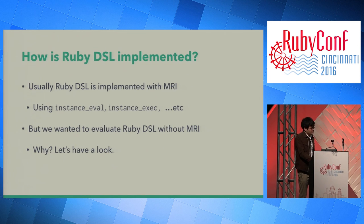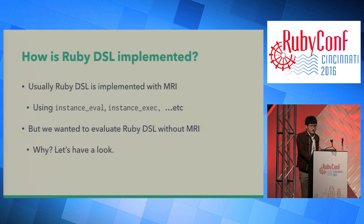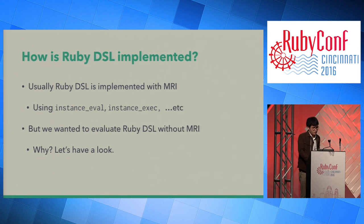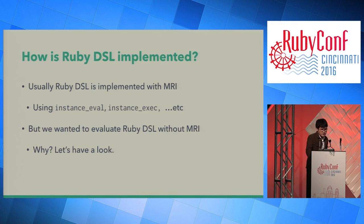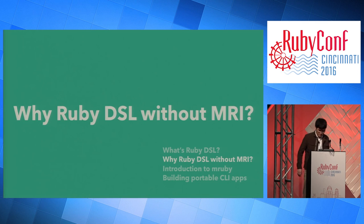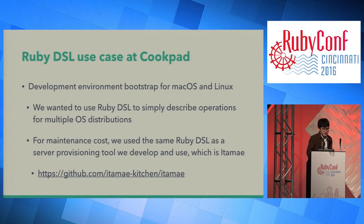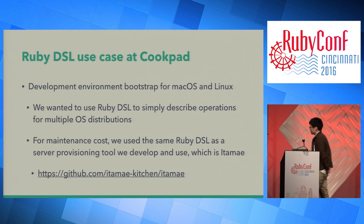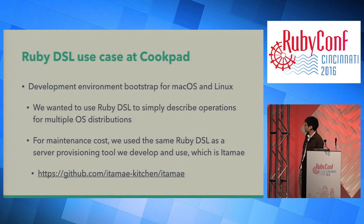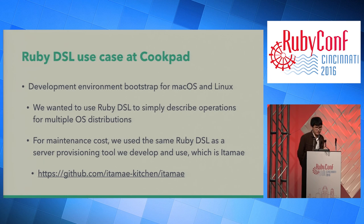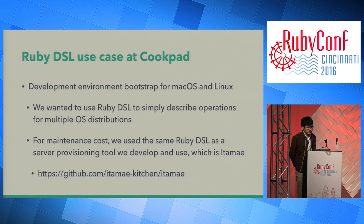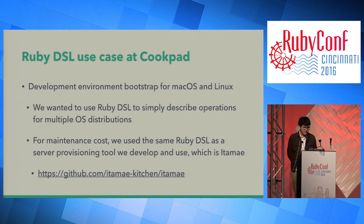Usually, Ruby DSL is implemented with MRI using instance_eval or instance_exec. But we wanted to evaluate Ruby DSL without MRI. Our use case at Cookpad is a development environment bootstrap script for macOS and Linux. We use not only macOS but also Linux distributions to develop web applications, and we wanted to use Ruby DSL to simply describe operations for multiple OS distributions.